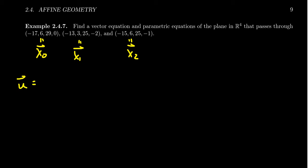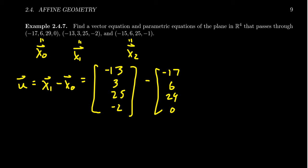But then we have to create our spanners by subtracting these things. So our first spanner we'll create by taking x₁ - x₀. So that will look like (-13, 3, 25, -2) take away (-17, 6, 29, 0). And so simplifying that actually gives us the spanner of (4, -3, -4, -2). So that's going to be our first spanner.